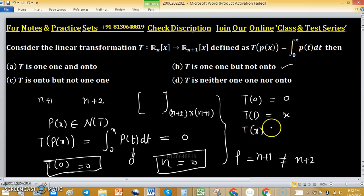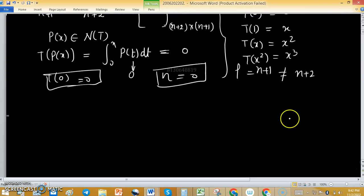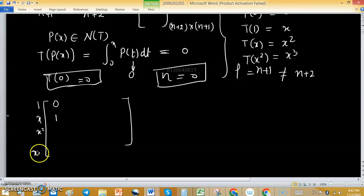Then T(x), the image of x², will be x³, and so on. We have the structure of the matrix representation of this linear transformation with columns for 1, x, x², and so on up to x^(n+1).